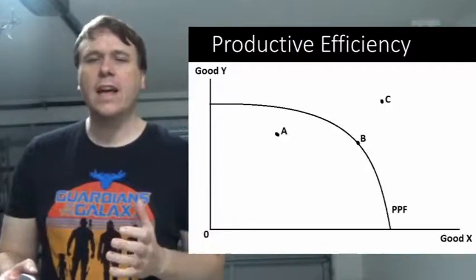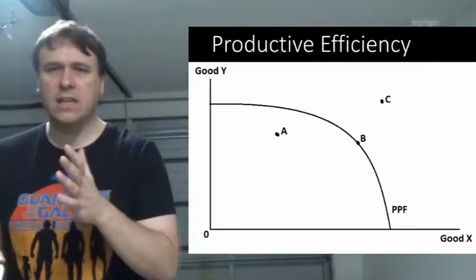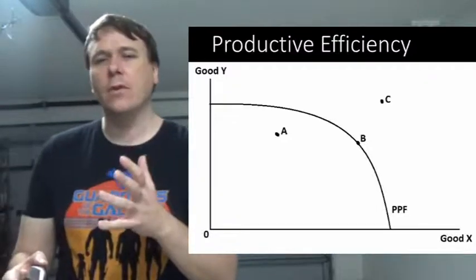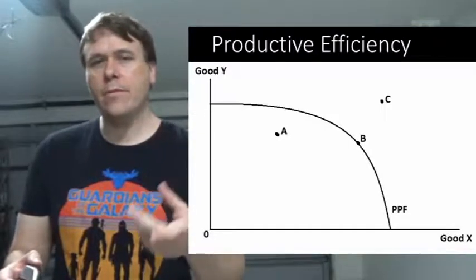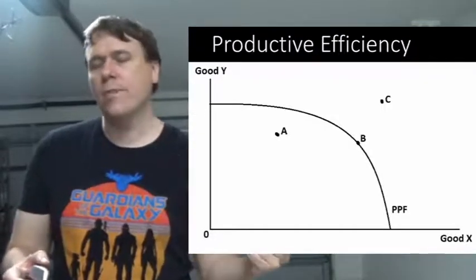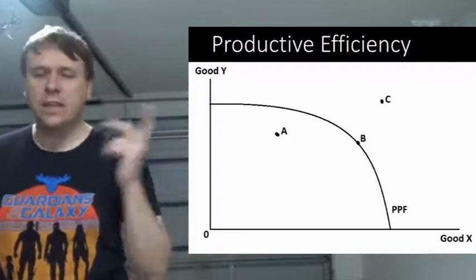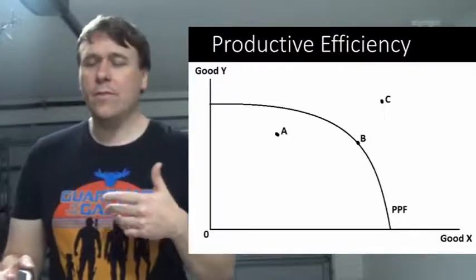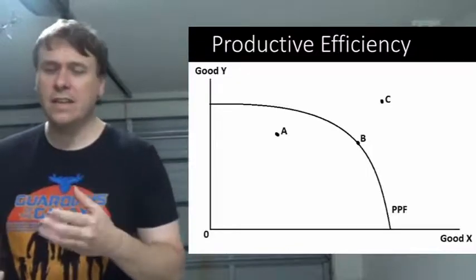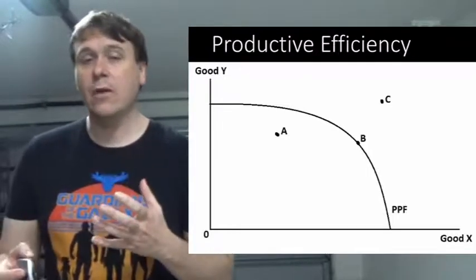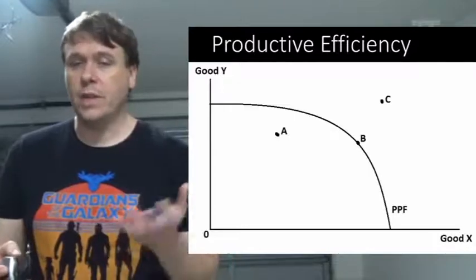There's also C as well and that's actually beyond your possibility frontier. So in other words it's unobtainable. So A and B they're possible, you can obtain them. B being productive efficient. A not being productive efficient. But C is unattainable at this point in time. Either because your labor doesn't have the skills necessary to produce that amount of pineapples, bananas, whatever.